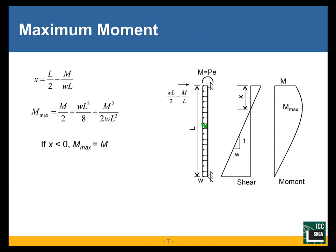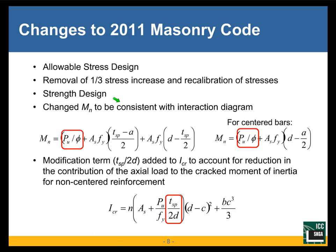Most masonry walls are modeled as simply supported walls, so you have a uniform out-of-plane load and then some sort of moment at the top of the wall. You get a shear-moment diagram that looks something like this, and you can calculate the location of the maximum moment. For most practical masonry design, just using WL²/8 plus M/2 is sufficient. The third term contributes very little, and it's hard to come up with a practical example where it contributes a lot.